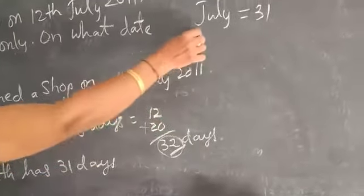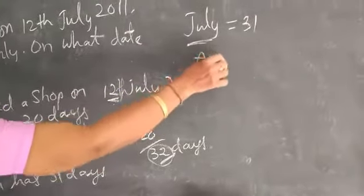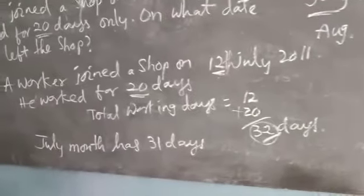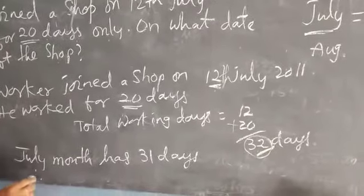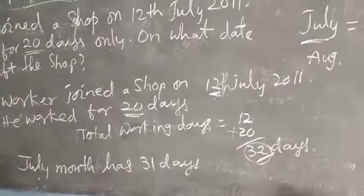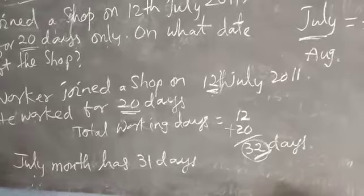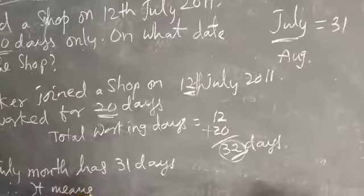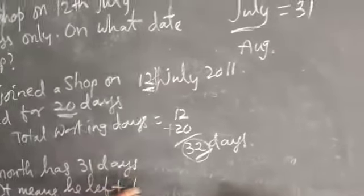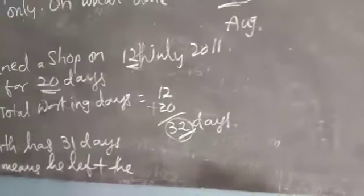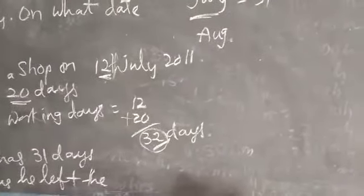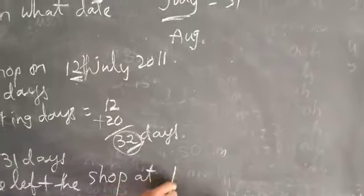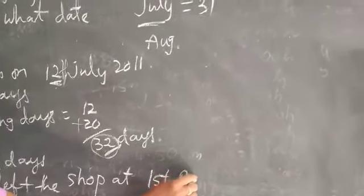32 days means one day more than 31. 31 days means one month, so the next month is August. Therefore he left the shop on 1st August 2011.